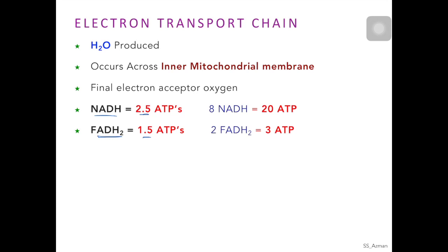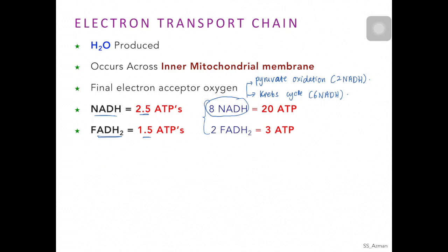Since we know one NADH can produce 2.5 ATPs and one FADH2 can produce 1.5 ATPs, we can now calculate the total number of ATPs being produced from one molecule of glucose. These 8 NADH are located in the mitochondria — 2 come from pyruvate oxidation and 6 come from the Krebs cycle. We multiply 8 NADH by 2.5 ATPs, giving us 20 ATPs. The 2 molecules of FADH2 come only from the Krebs cycle; we multiply 2 FADH2 by 1.5 ATP to get 3 ATPs.